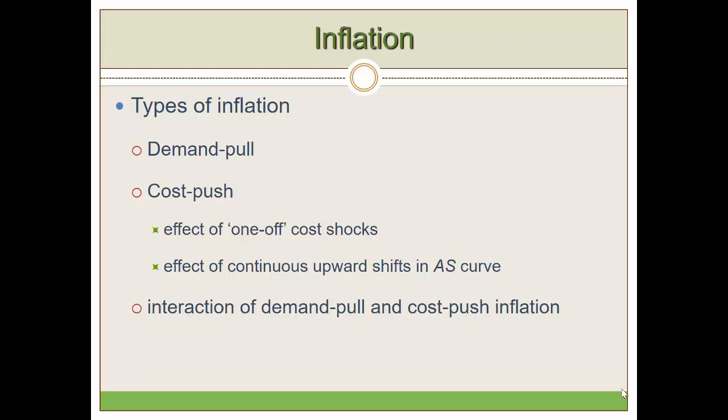Cost-push inflation can be one-off or continuing. In the case of continuing cost-push inflation, production costs in the economy grow continuously, leading to growth in prices. As a result, the aggregate supply curve contracts, or shifts to the left.